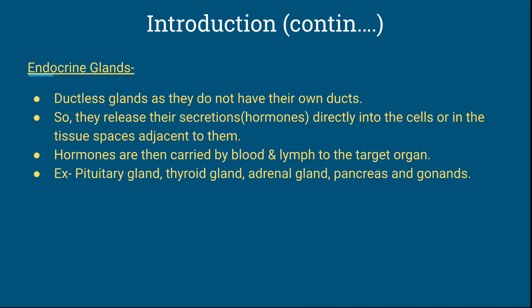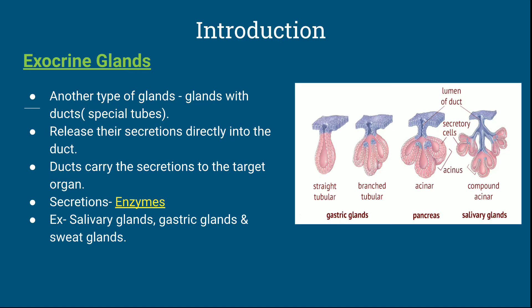Examples of endocrine glands include the pituitary gland, thyroid gland, adrenal gland, pancreas, and gonads. In our body there are two types of glands: endocrine glands, which are ductless glands, and exocrine glands, which have ducts.